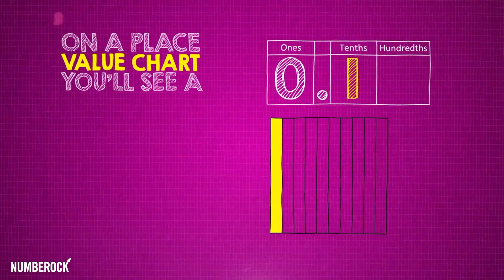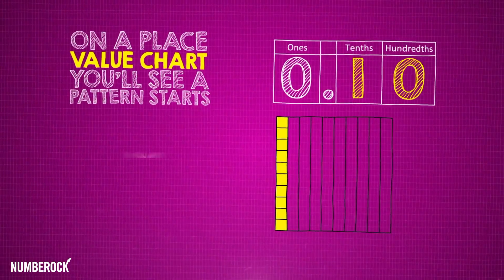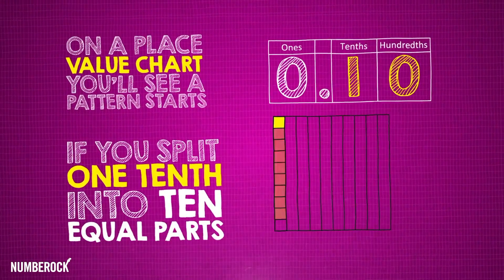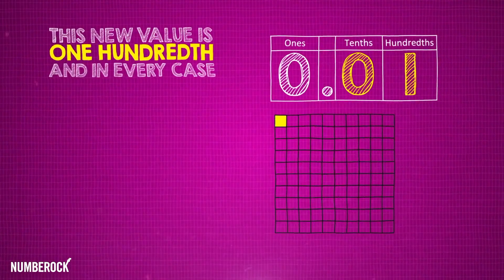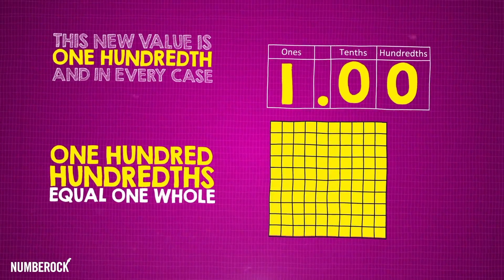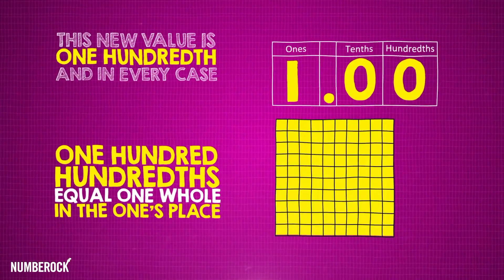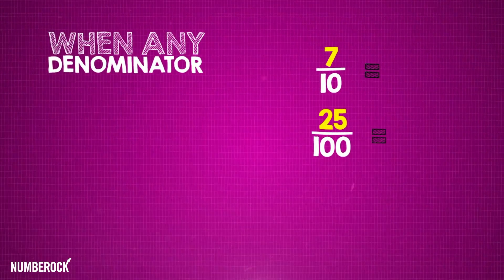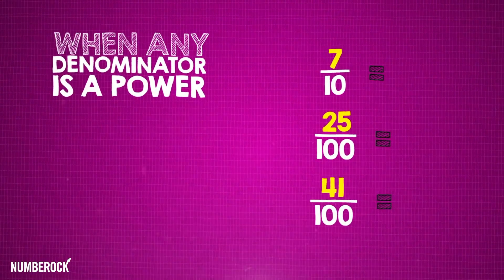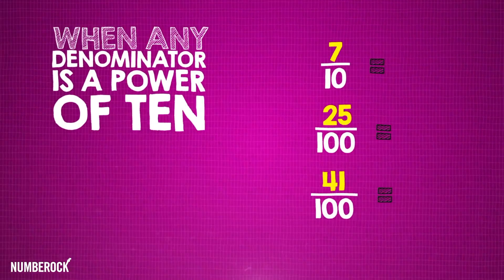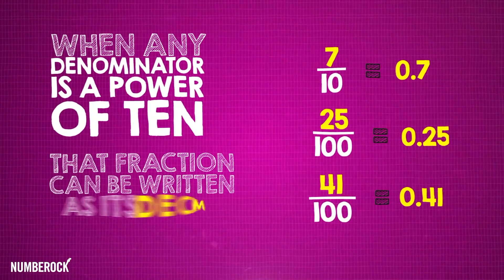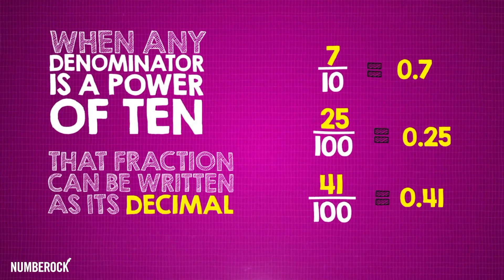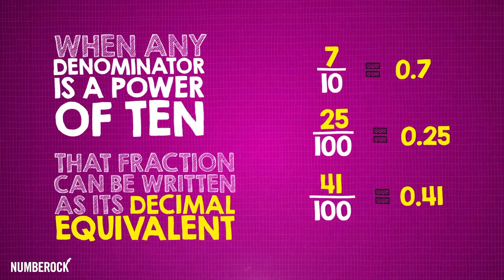On a place value chart, you see a pattern starts. If you split one tenth into ten equal parts, this new value is one hundredth, and in every case, one hundred hundredths equals one whole in the one's place. When any denominator is a power of ten, that fraction can be written as its decimal equivalent.